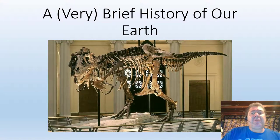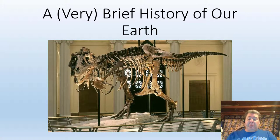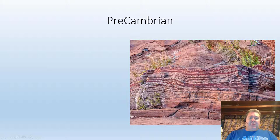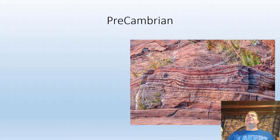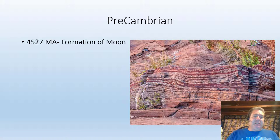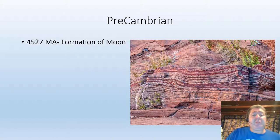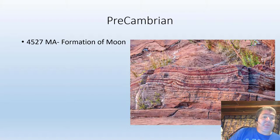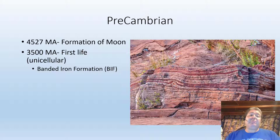All right folks, here we go — a very brief history of our Earth, looking at those four different time eras. First we have the Pre-Cambrian, everything from the beginning of our planet 4.55 billion years ago up to 544 million years ago. Shortly after the formation of our Earth, we have the formation of our Moon, about 3.5 billion years ago.